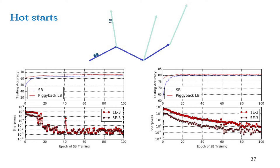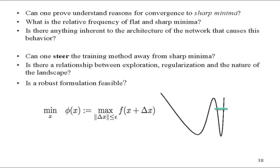Open questions: can one prove and understand the reasons for convergence to sharp minima? What is the relative frequency of sharp minima versus wide minima in these neural networks? Is it just this class of functions? Can one steer a batch method to go to the right place? That would be good because we know how to parallelize batch methods, and the stochastic gradient method is very difficult to parallelize. Just take these questions and do your thesis and you'll become famous.